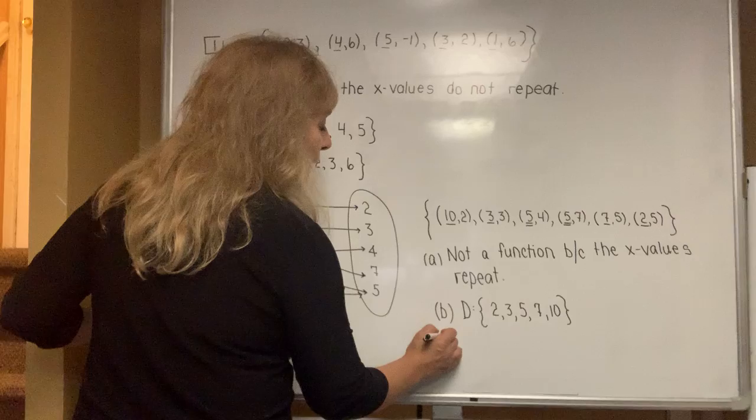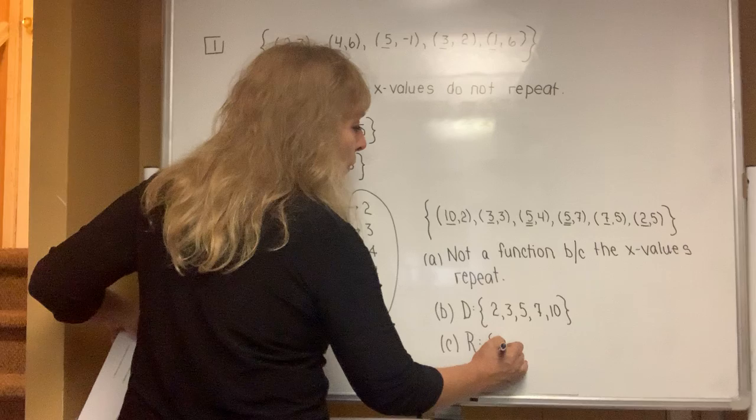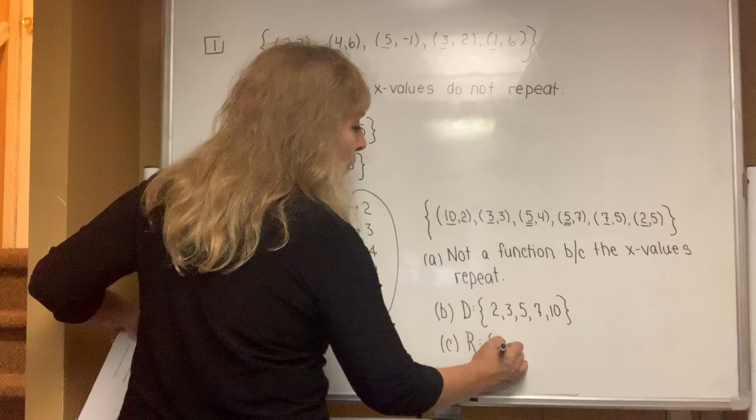When they ask you to figure out what the range is, same concept, except you're only going to list the y values, which are the second number in each parenthesis. So in order, I see a 2, 3, 4, 5, and 7. And remember, don't repeat those values. You only list them once. And that is the end of page 2.